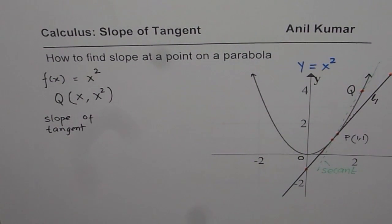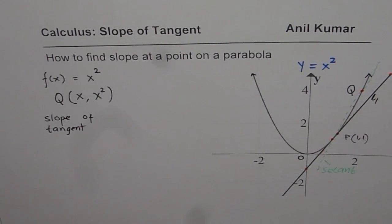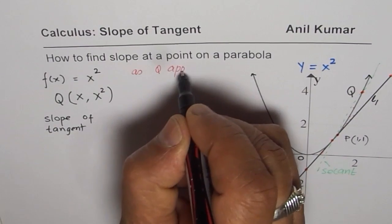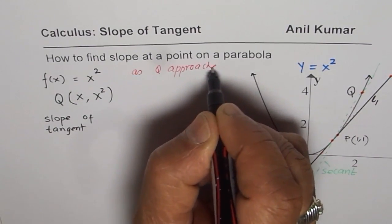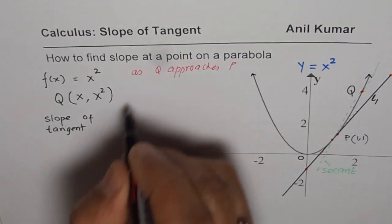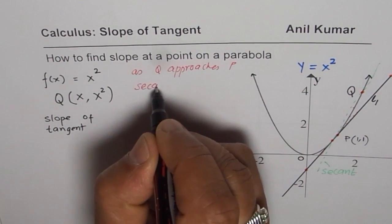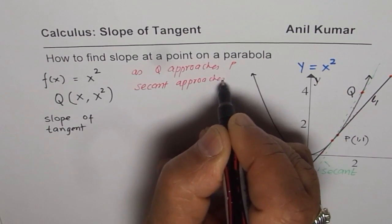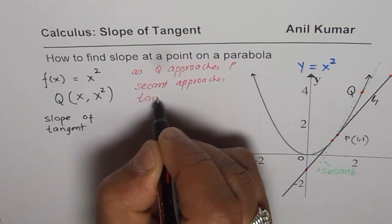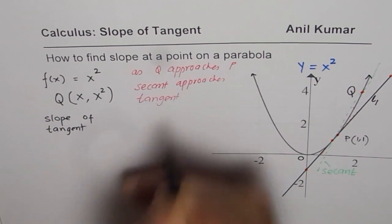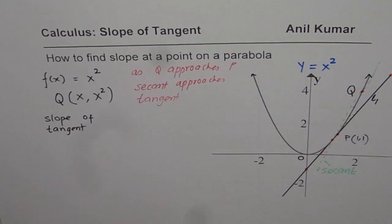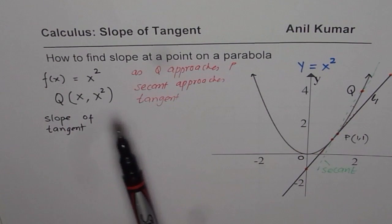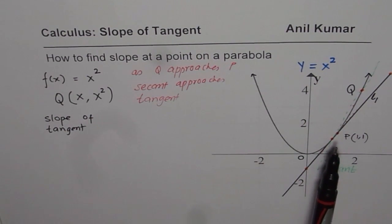So what we observe here is that as Q approaches P, secant approaches tangent. So that is what we observe and this is the concept which is going to be applied to find the slope of the tangent line.